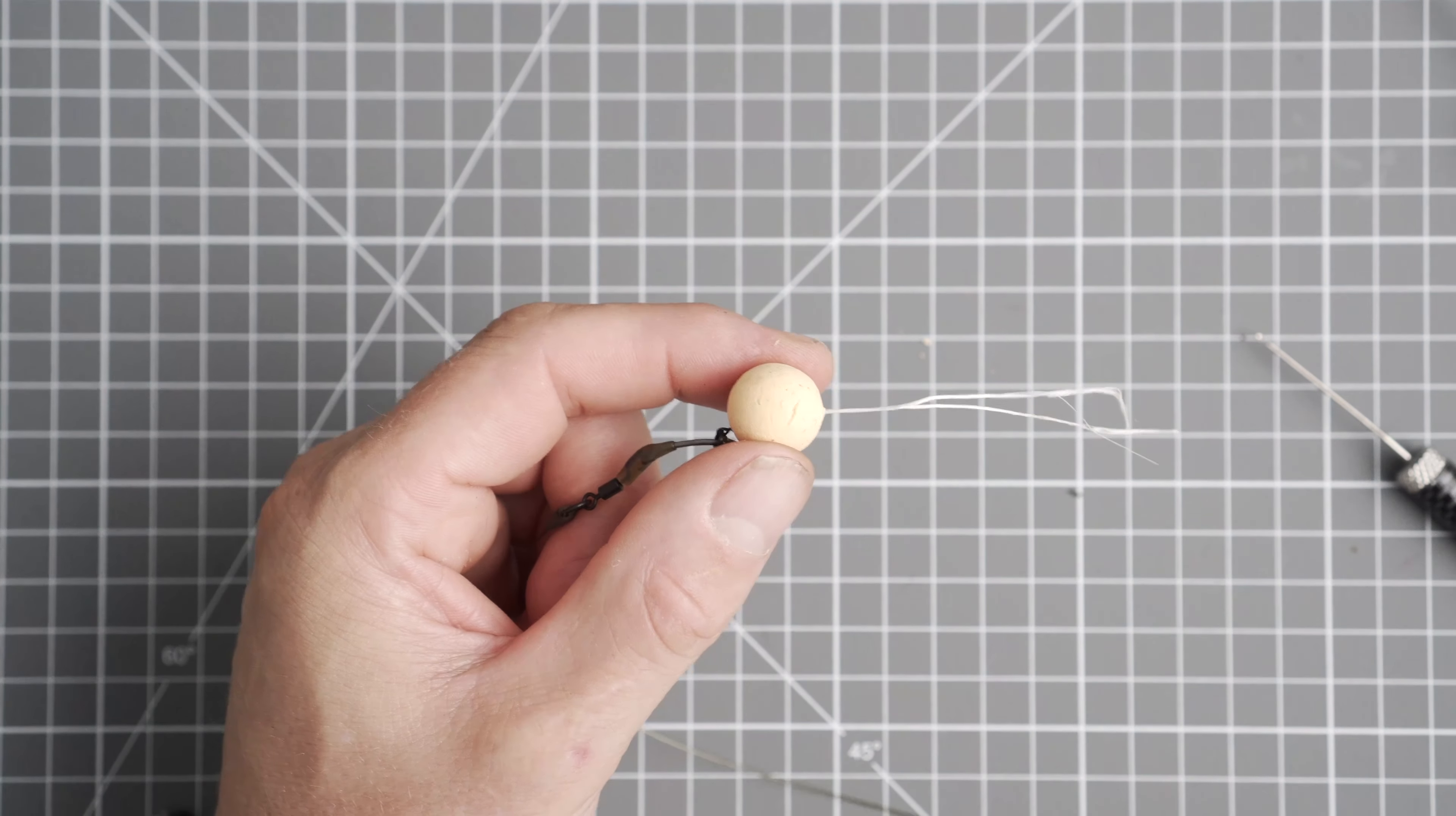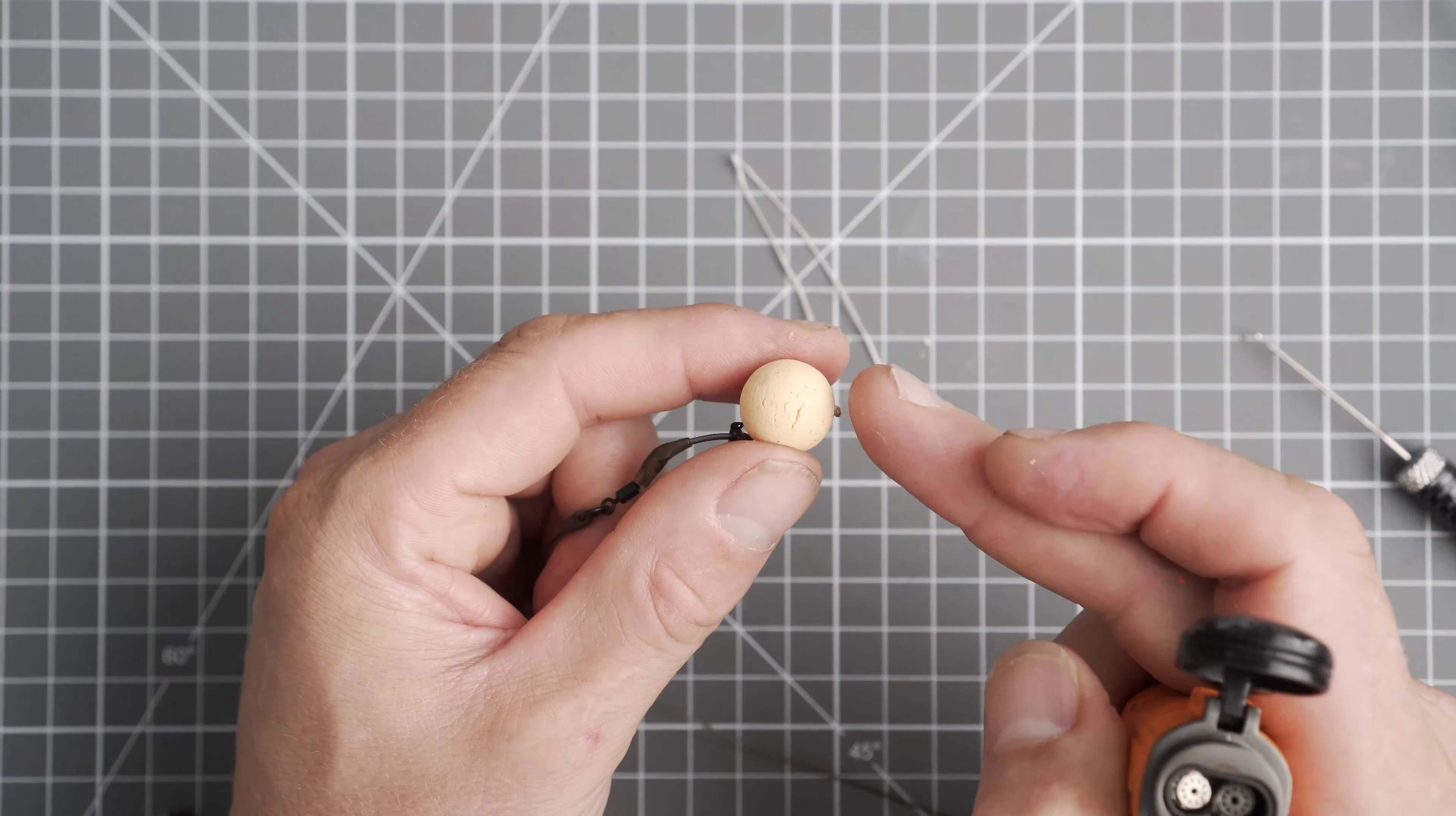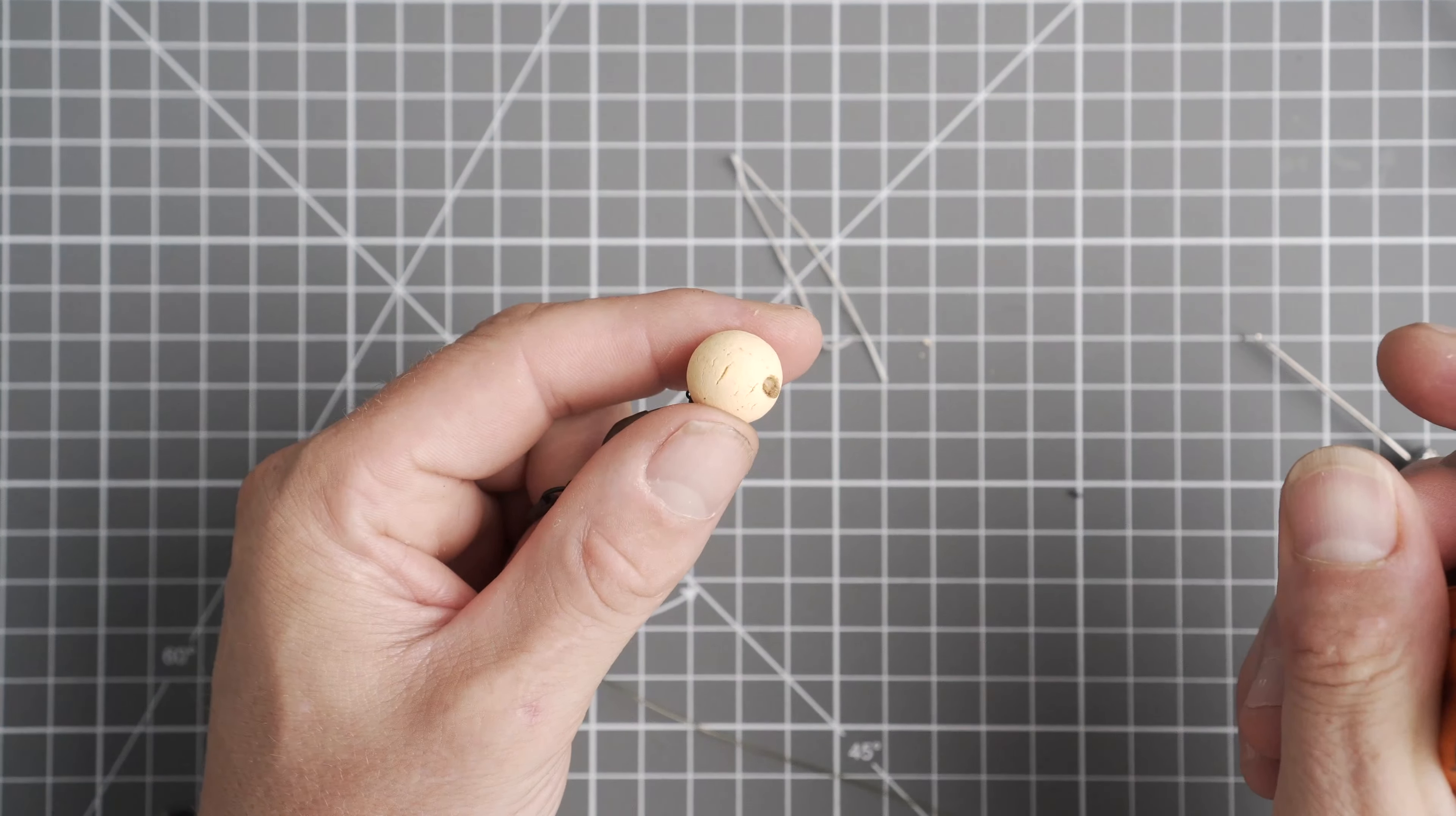Trim off with a sharp pair of scissors, melt down with your lighter, blob it in place. Job done.